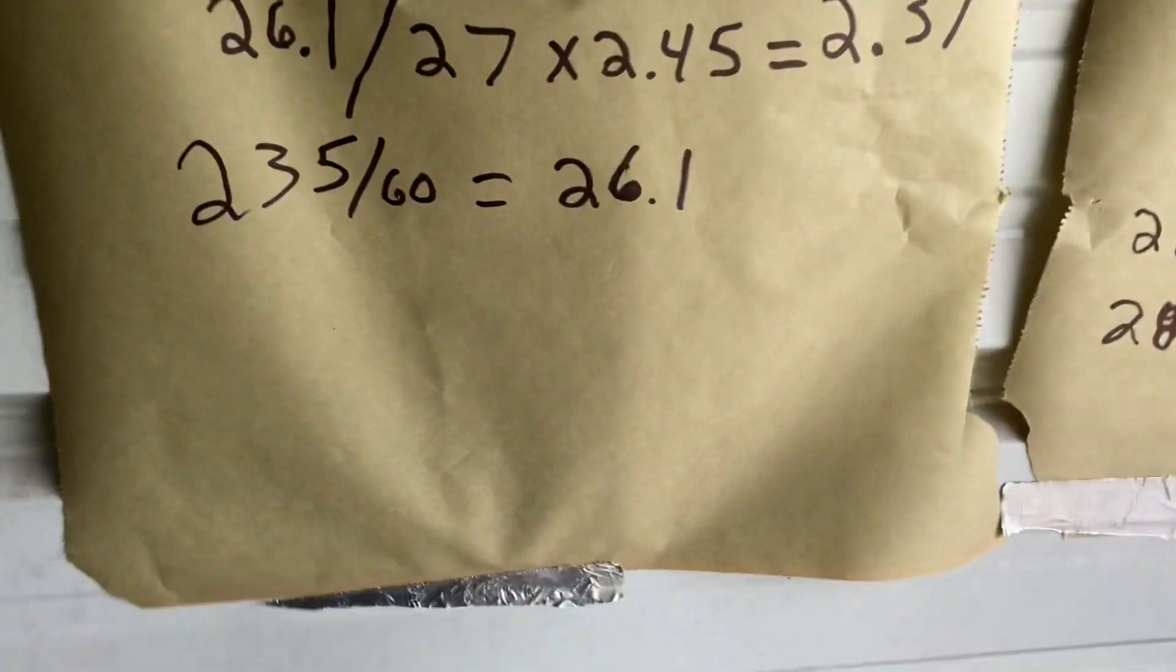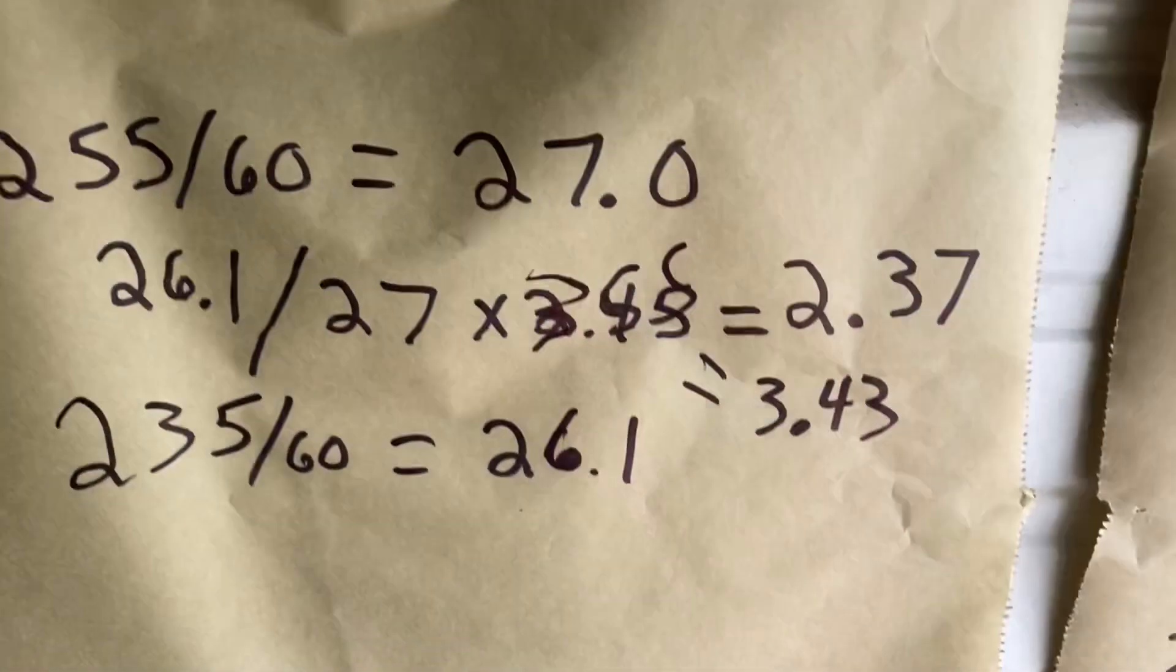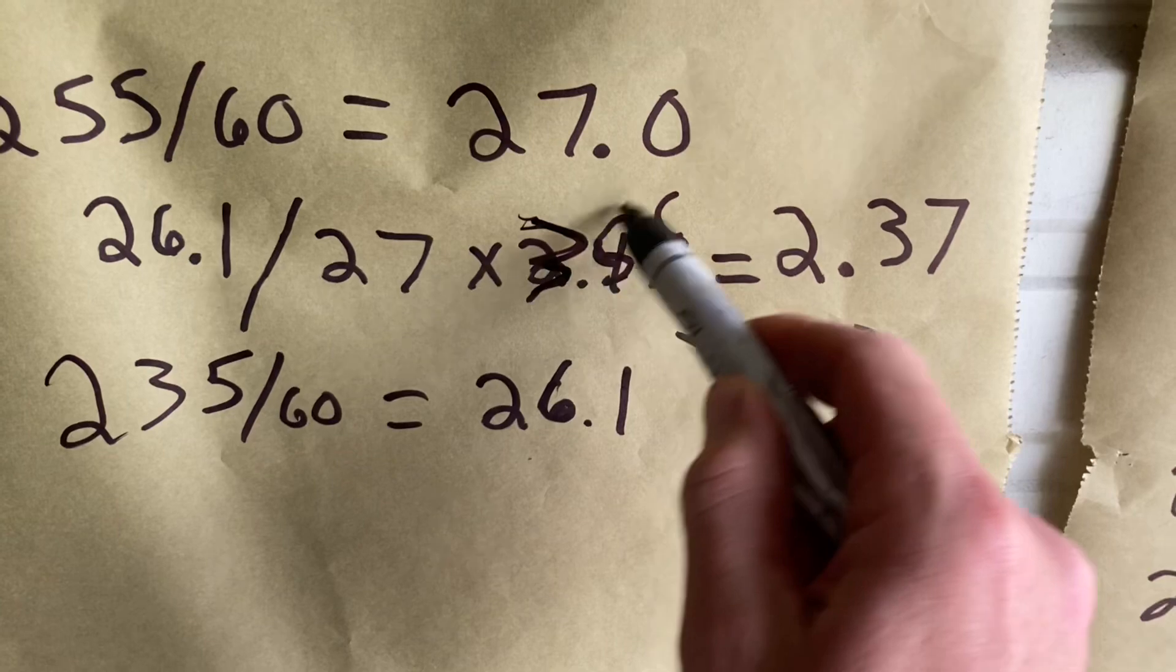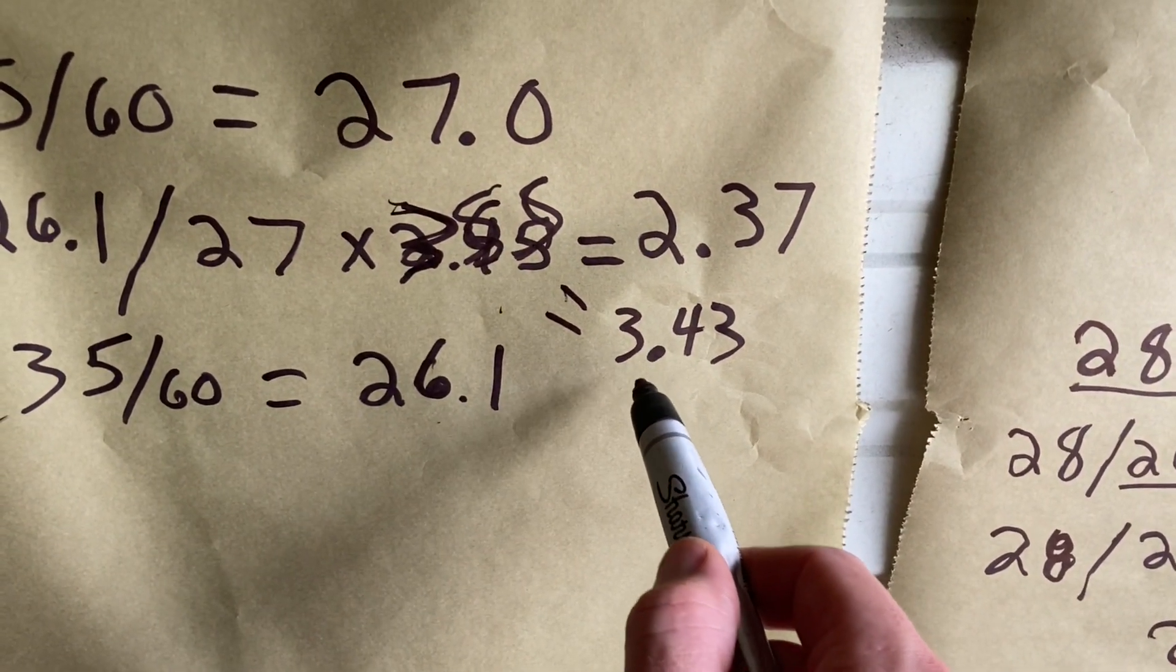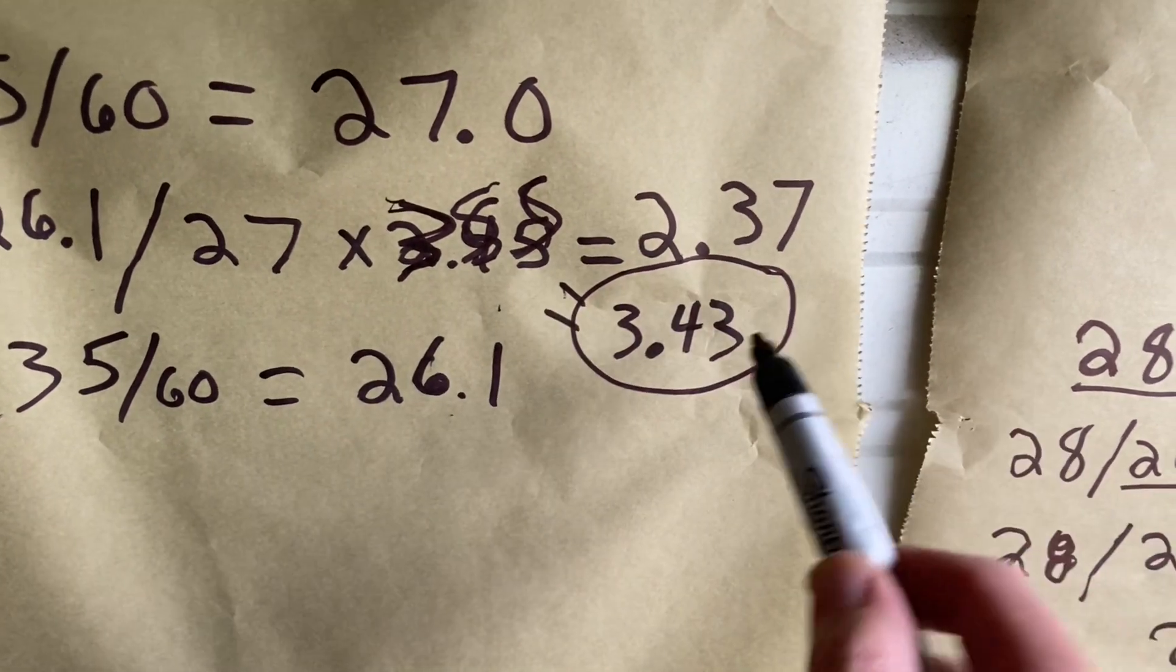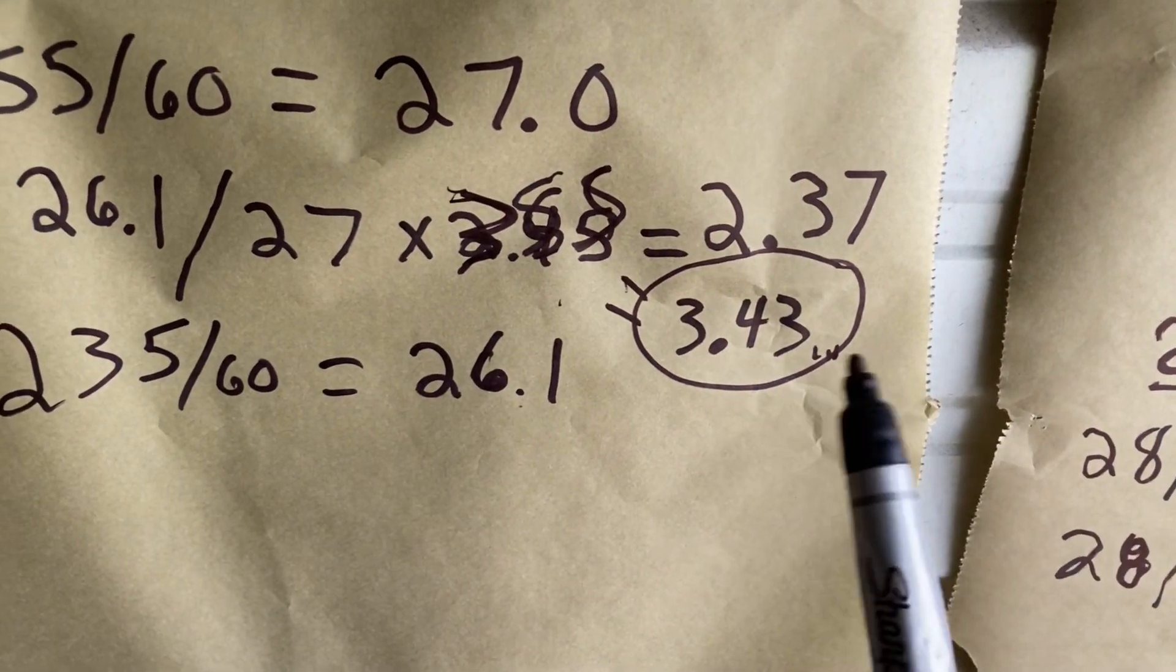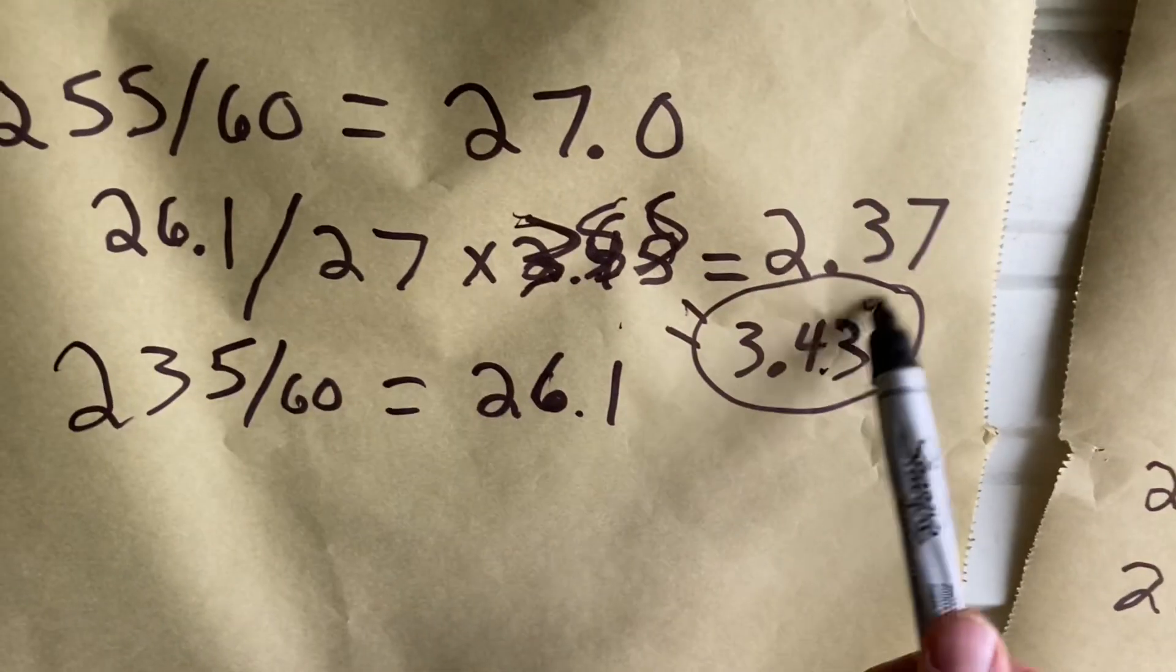But when you go to switch that, you can do simple math just like we did here. So if we change that to a 3.55, we'll do that math. It will give you a new gear ratio or effective ratio of 3.43, which is a lot better gear for more low end, better at the racetrack for sure.